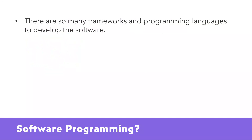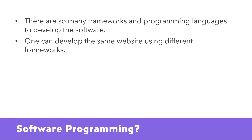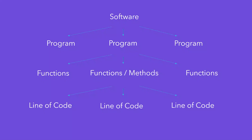There are so many frameworks and programming languages available to develop software. One can develop the same website using different frameworks. For example, if I want to build a blog website, I can develop it using .NET, Java, Angular, or Python. The only purpose of this discussion is that if you are learning .NET or C# then do not assume you are missing something — whatever others are building in other programming languages, you can also develop the same thing using the .NET framework.